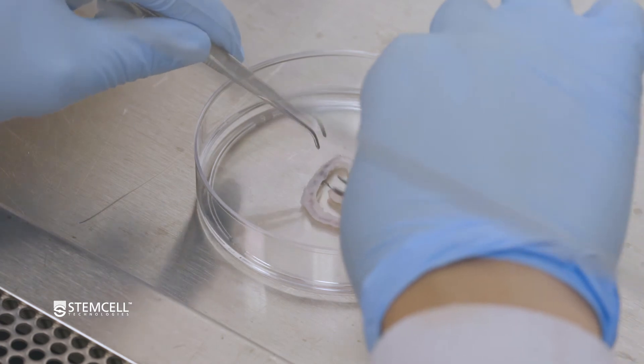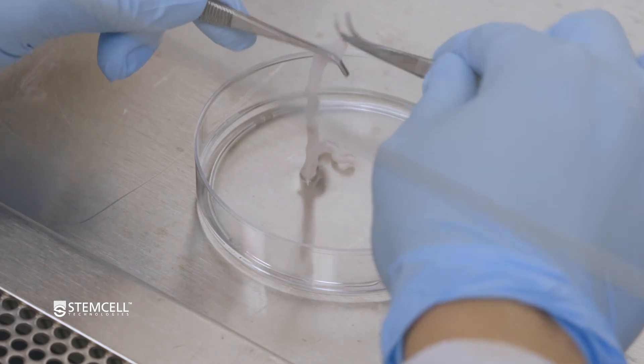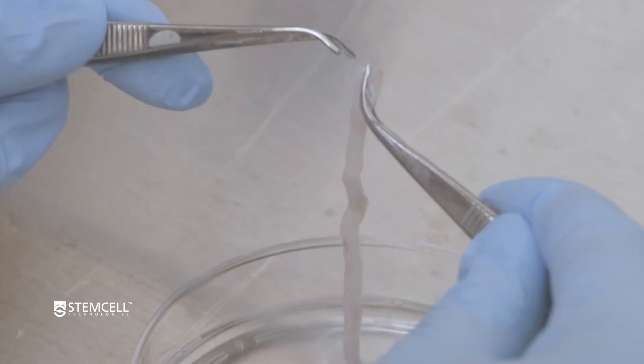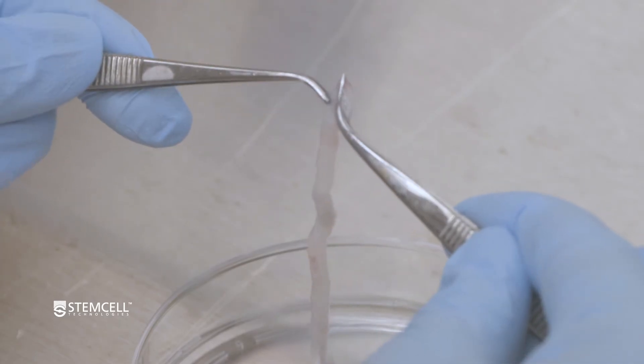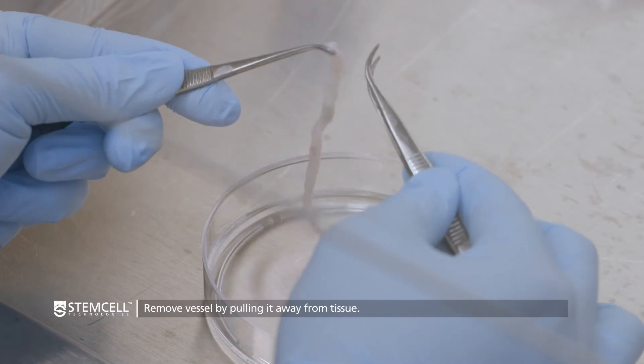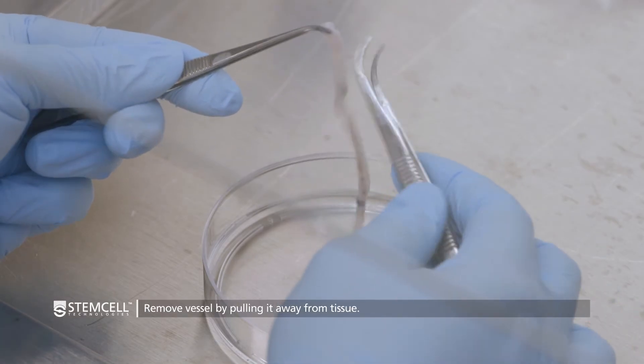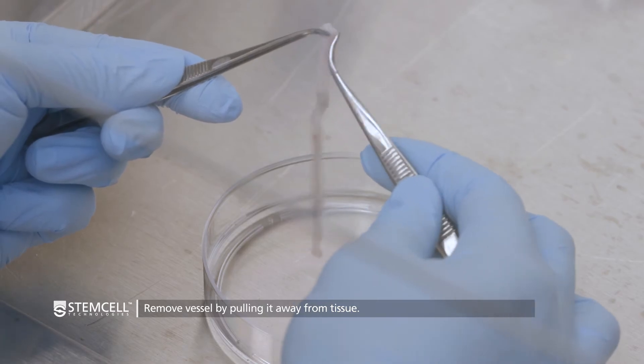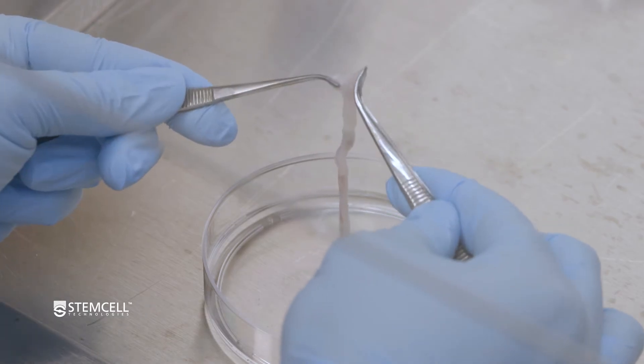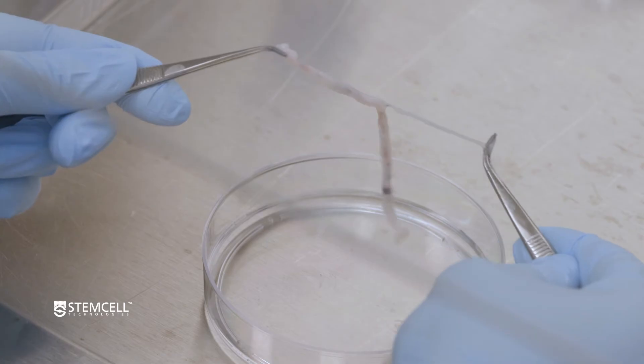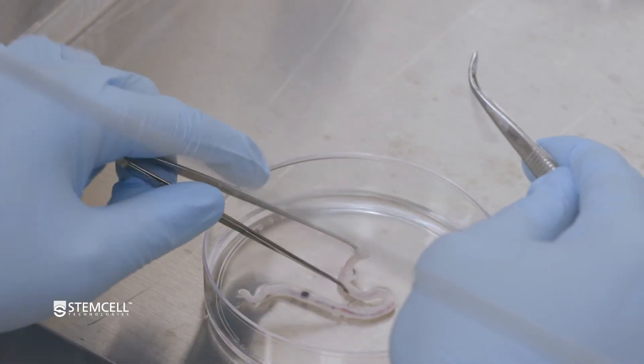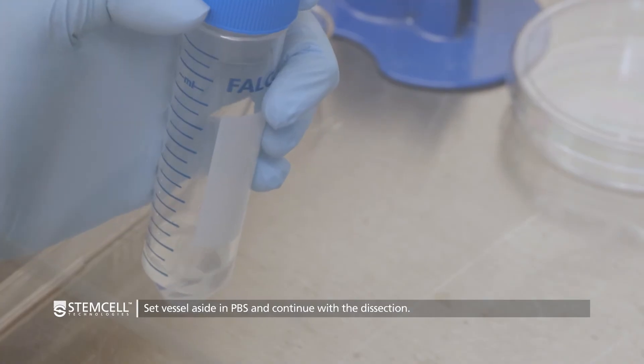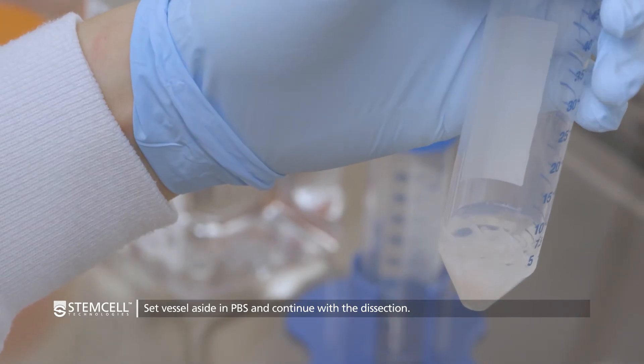Strip the perivascular Wharton's jelly from the vessels by tightly gripping the opaque or white tissue with one forcep, while holding the vessel with another forcep in the other hand. This tissue should easily pull away from the vessel. The vessels are quite fragile. Be careful not to pierce the endothelial layers in order to minimize contamination with endothelial cells. Set the tissue strips aside in PBS while all of the vessels are stripped. Discard the bare vessels.